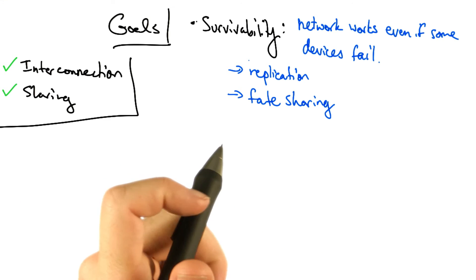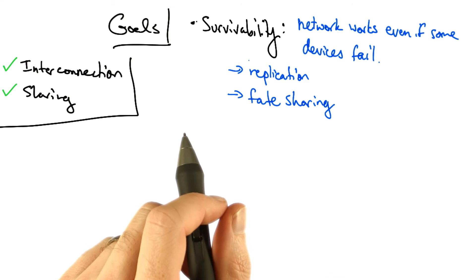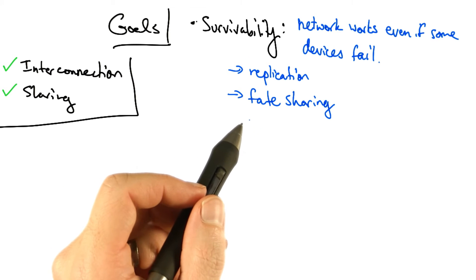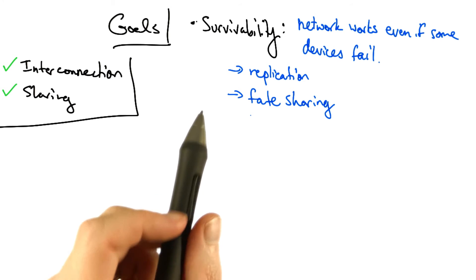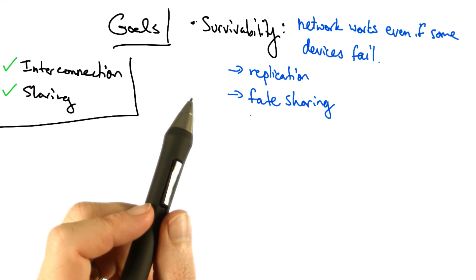Another way to design the network for survivability is to incorporate a concept called fate sharing. Fate sharing says that it's acceptable to lose state information for some entity if that entity itself is lost.